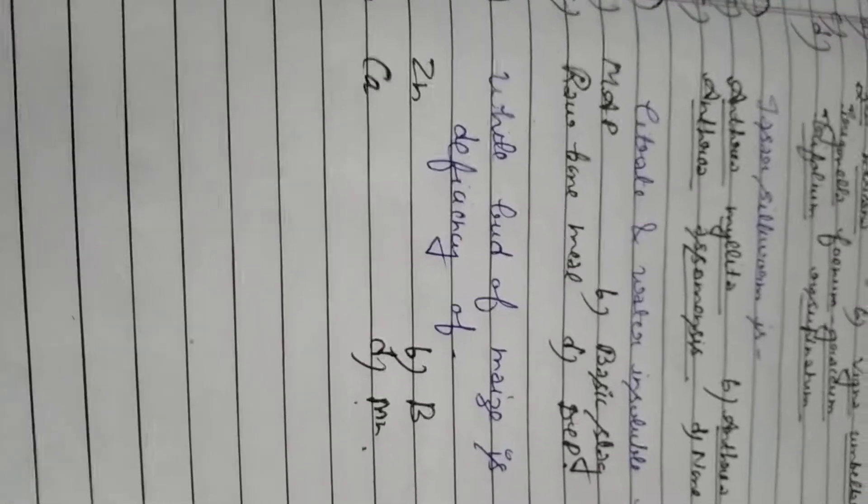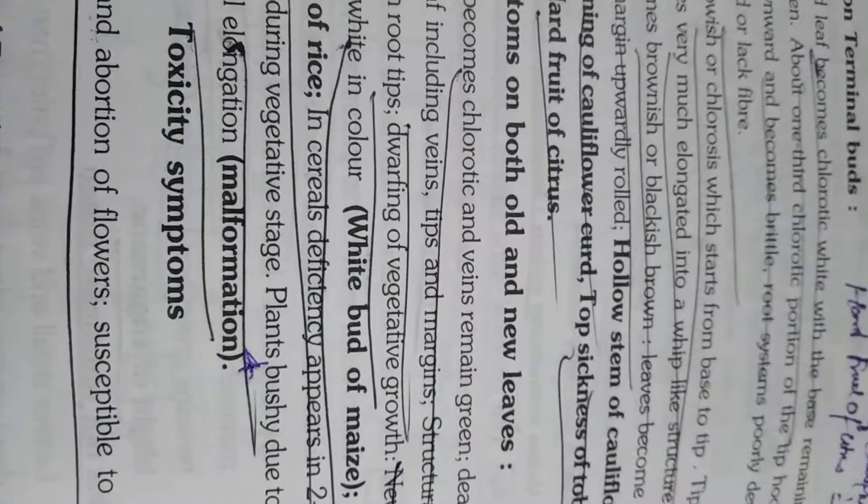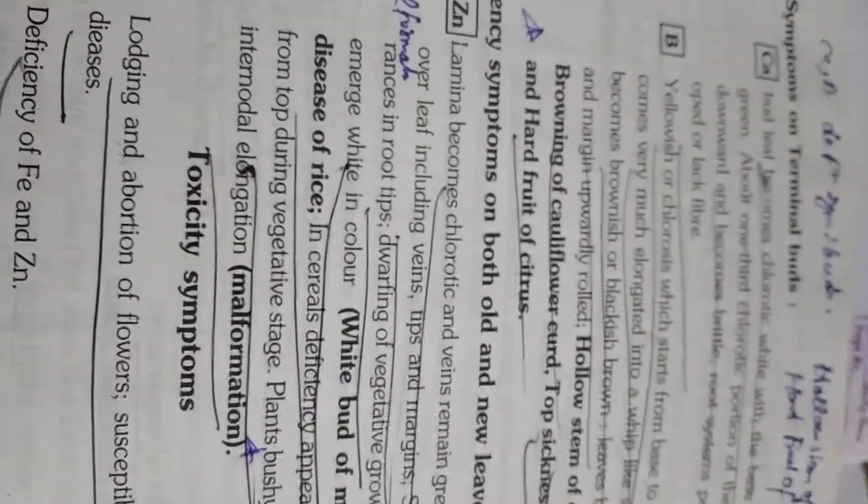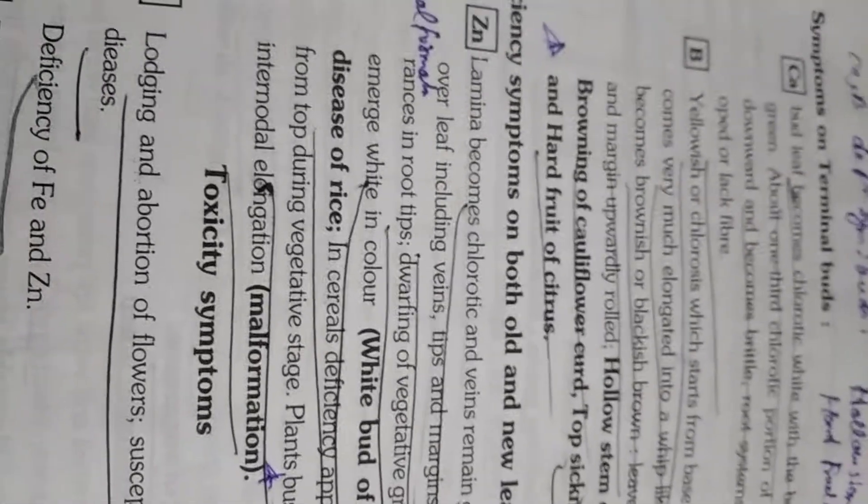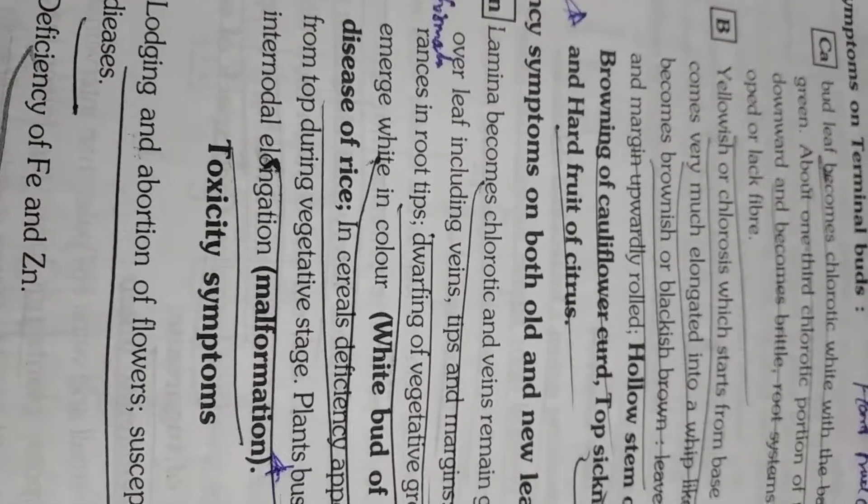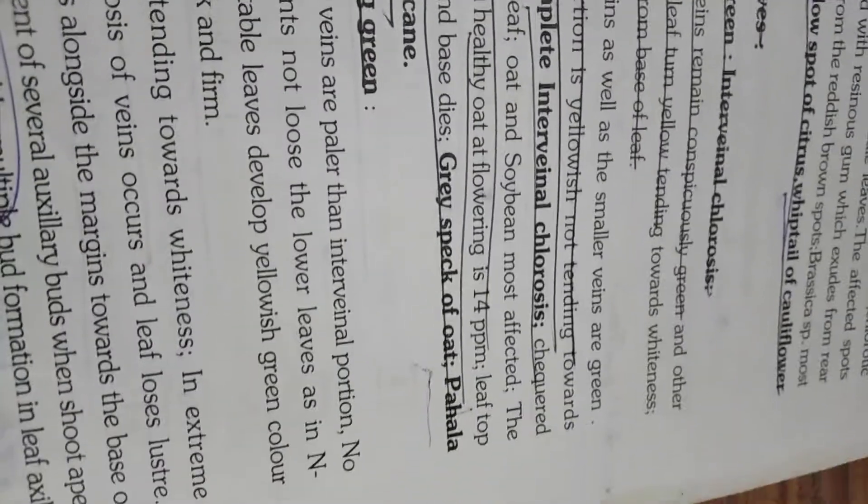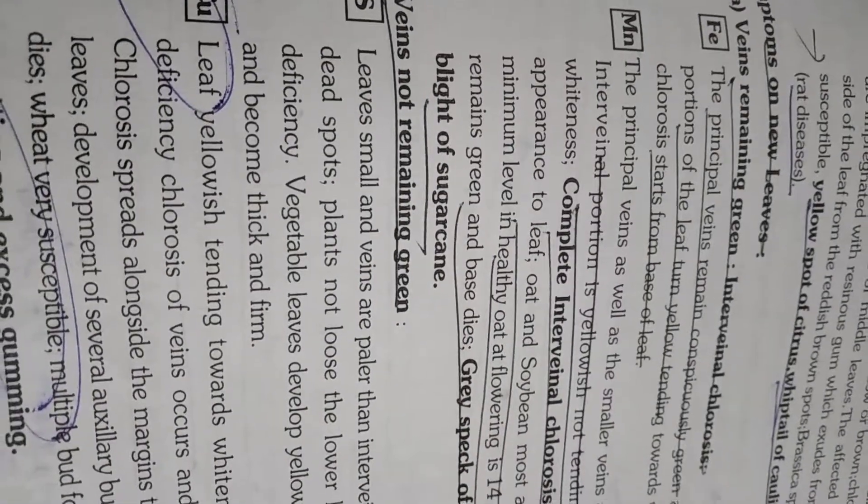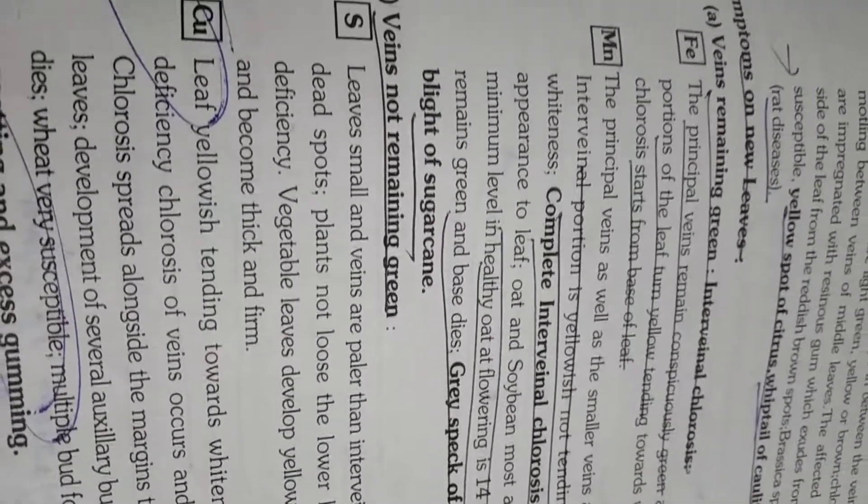This boron deficiency causes hollow stem of cauliflower, browning of cauliflower curd, top sickness of tobacco, hard fruit of citrus. These are all caused by boron deficiency. Manganese deficiency you also remember. Gray speck of oat, pahala blight of sugarcane, complete interveinal chlorosis. It is caused by manganese.